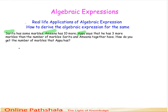Sarita has some marbles, so let's denote that number with the variable x. Now, Amina has 10 more marbles than Sarita. Sarita had x marbles, and 10 more marbles means we add 10 to it, so Amina has x plus 10 marbles.